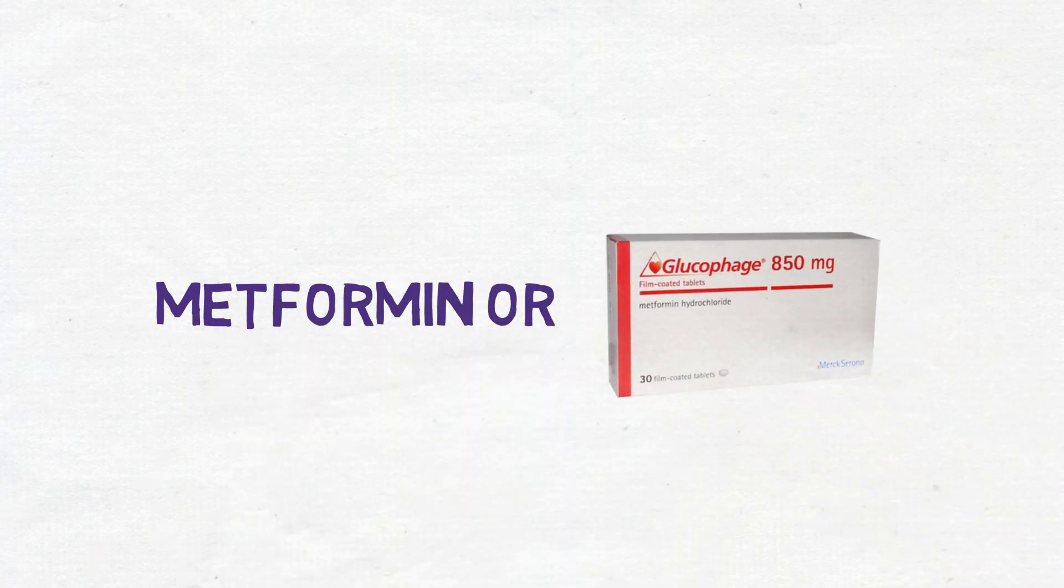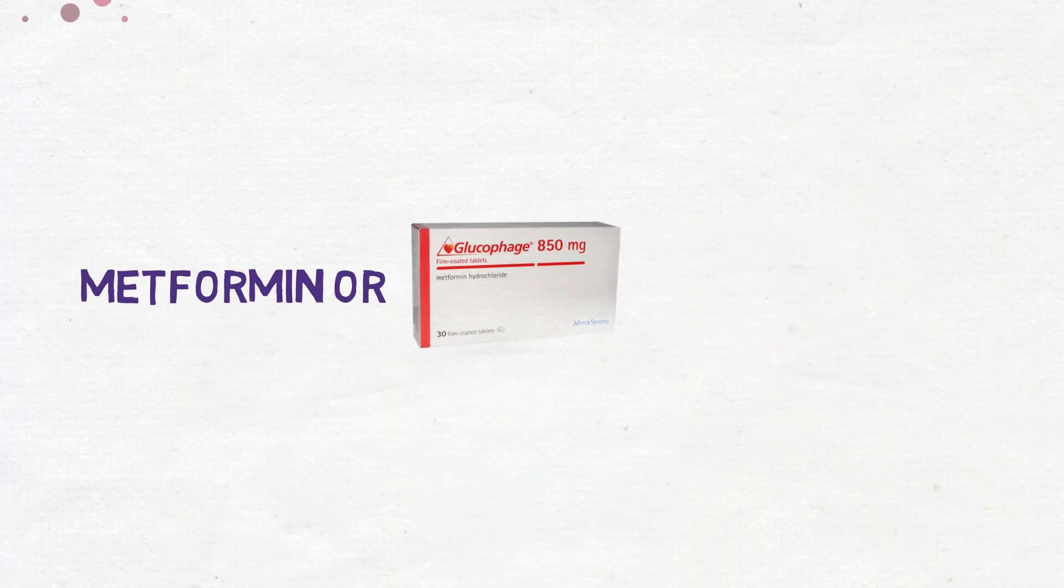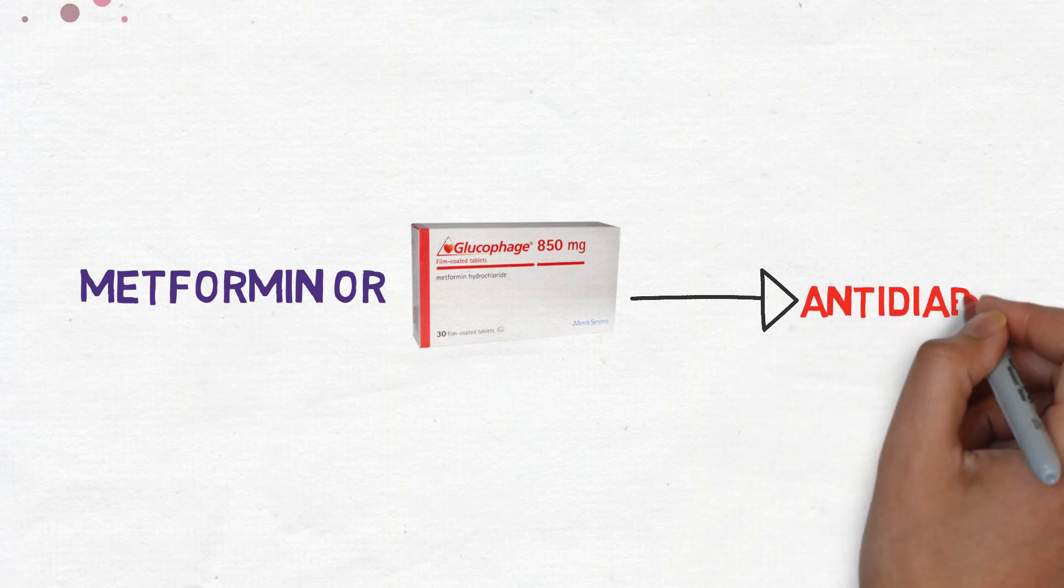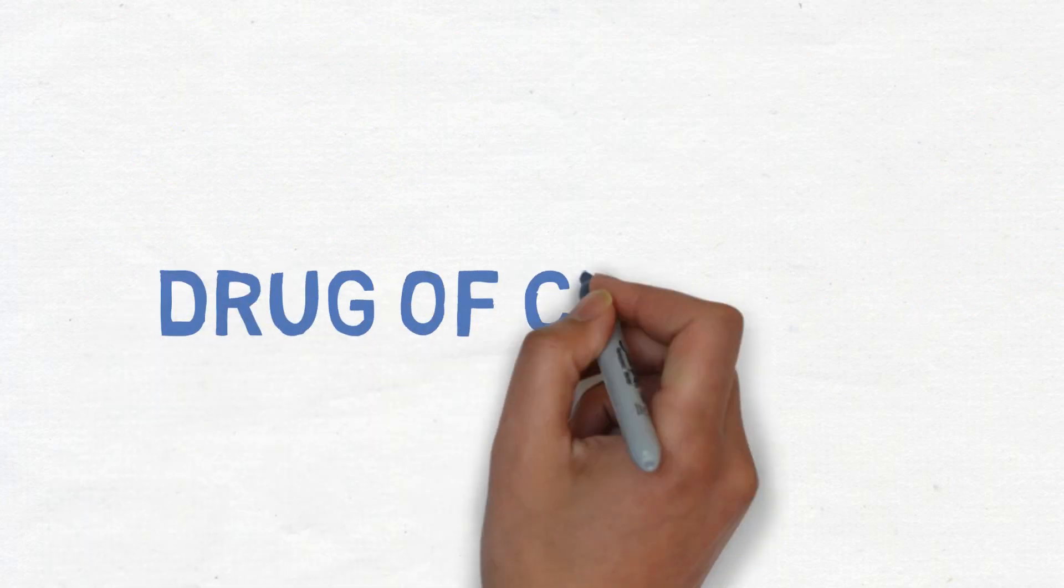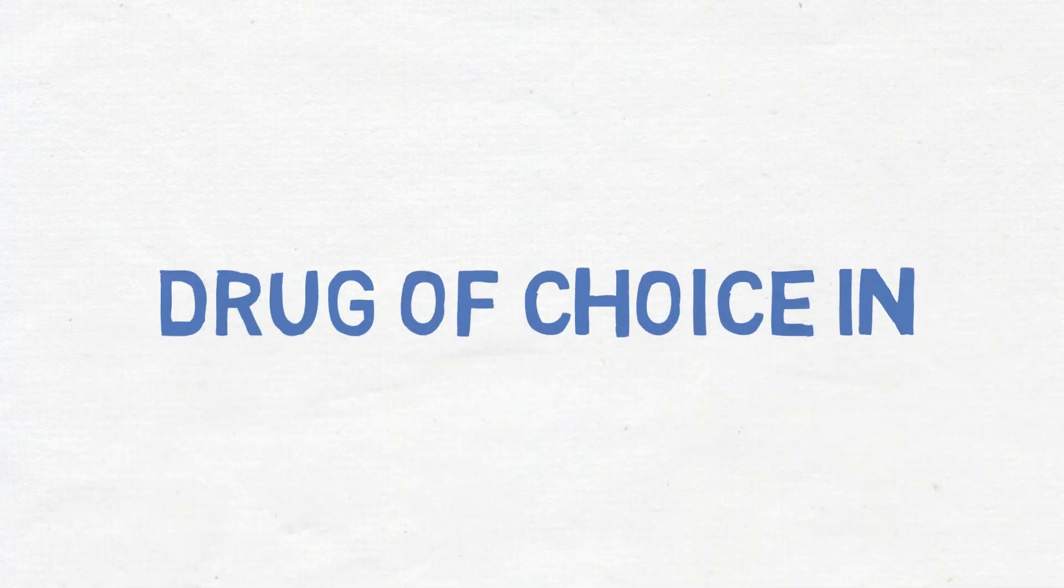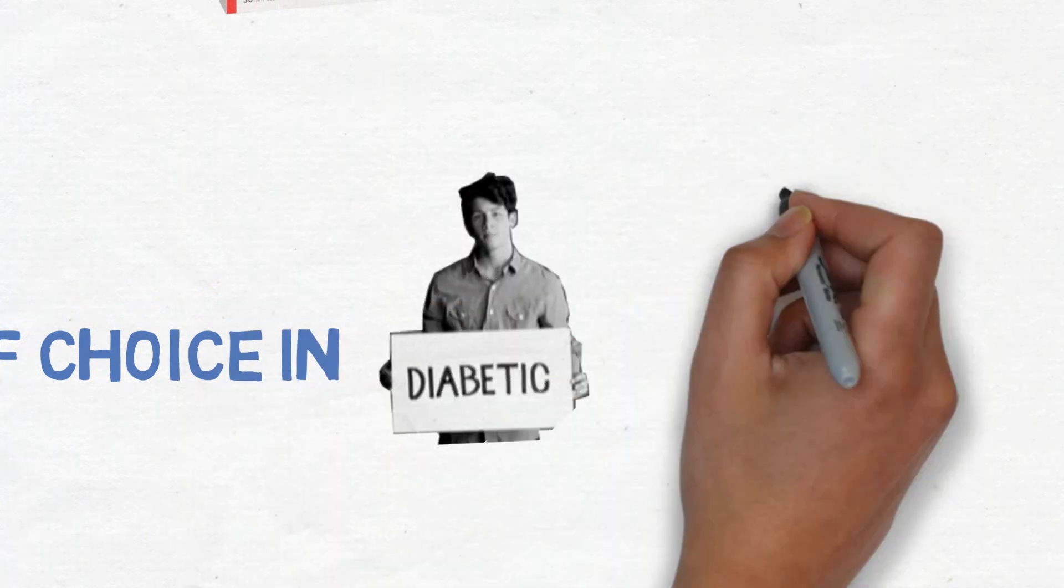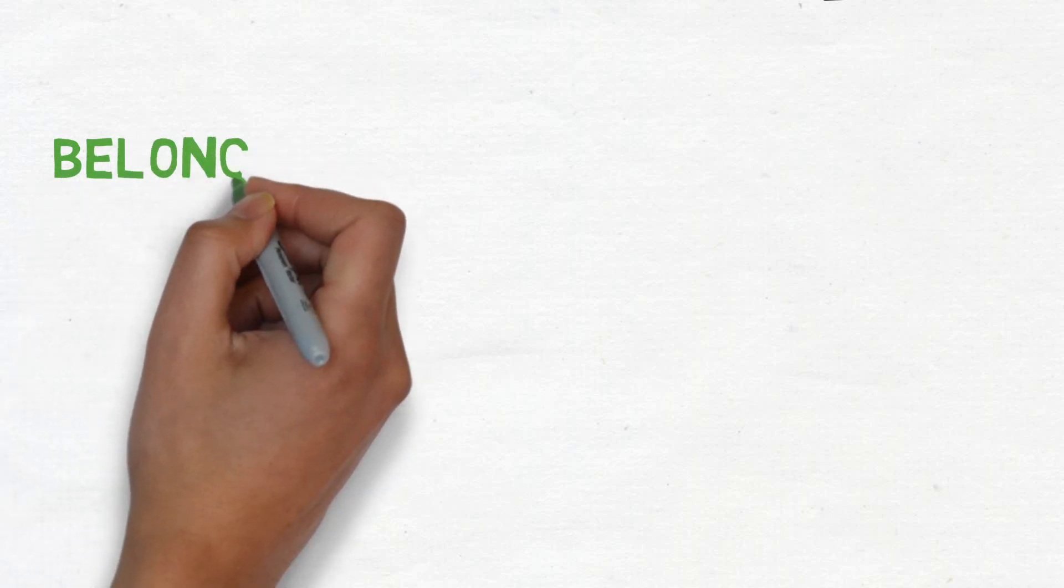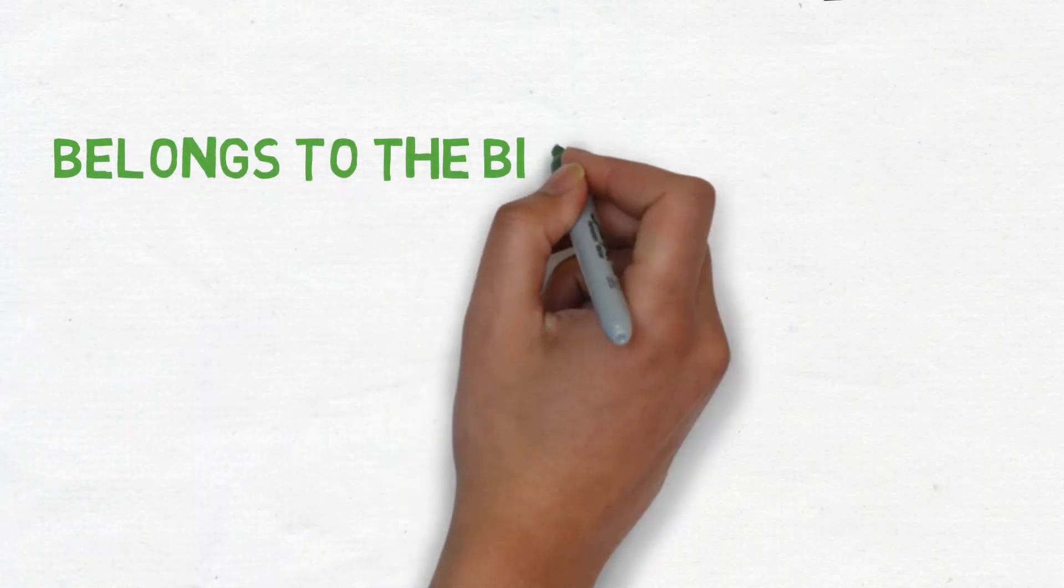Metformin, or Glucophage as it's widely known, is an antidiabetic medication used to treat insulin resistance. Metformin is the first-line therapy of type 2 diabetes in obese patients. Metformin belongs to a class of medications called biguanides, and it's the only one in that class.